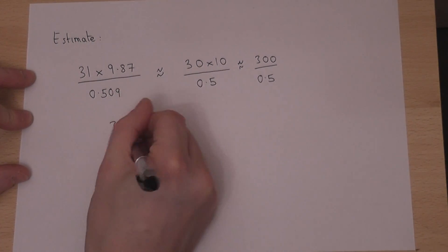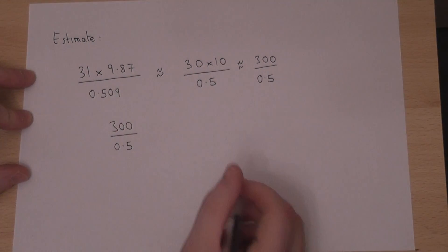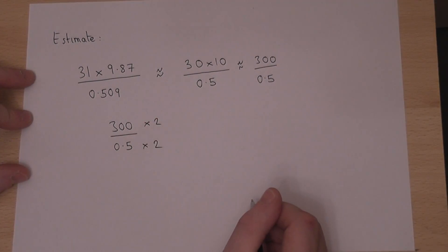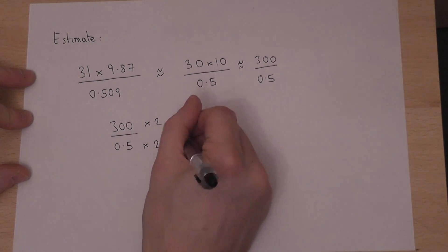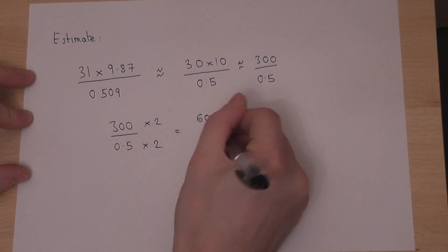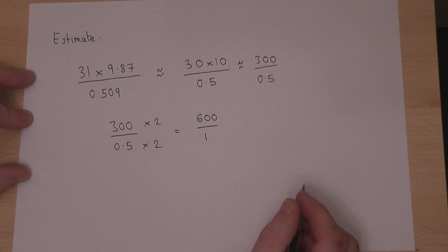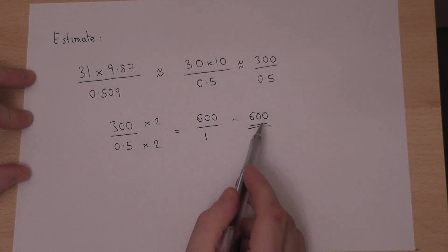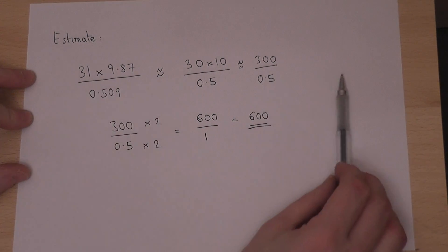Now 300 divided by 0.5, if I times top and bottom by 2 I don't change the actual fraction. So this becomes 600 divided by 1 which is just 600. So 600 is an estimate of the original calculation.